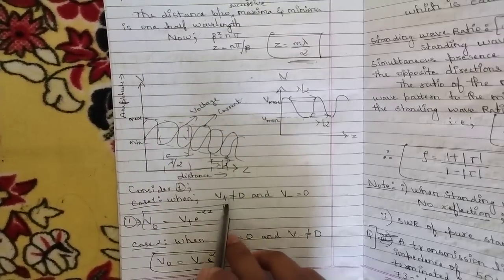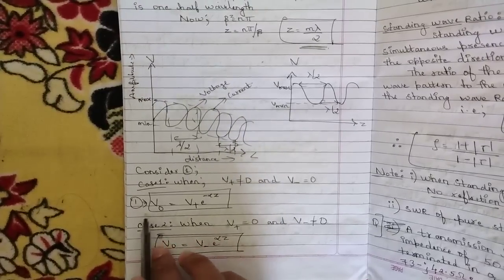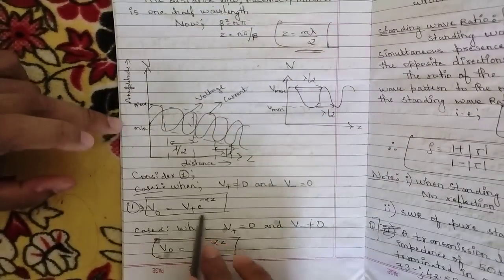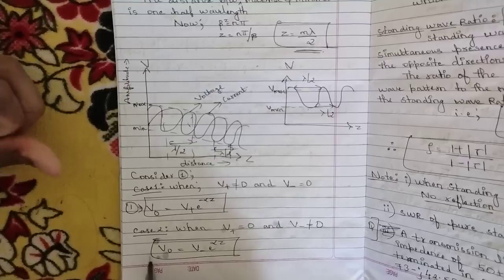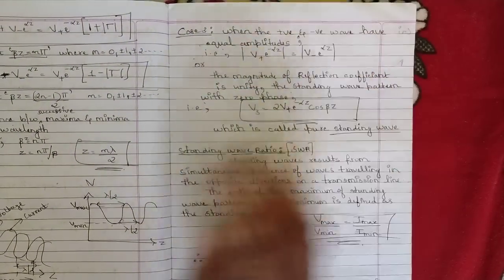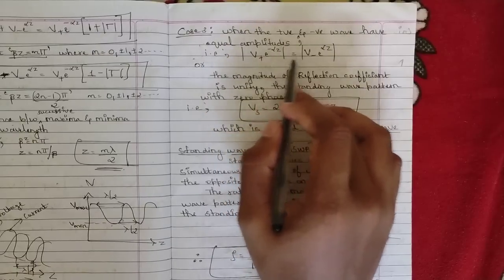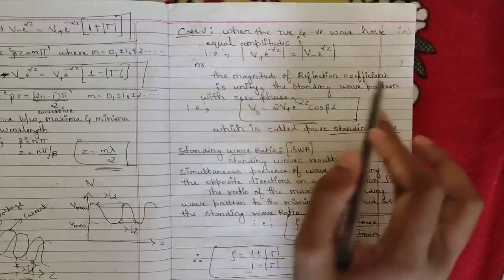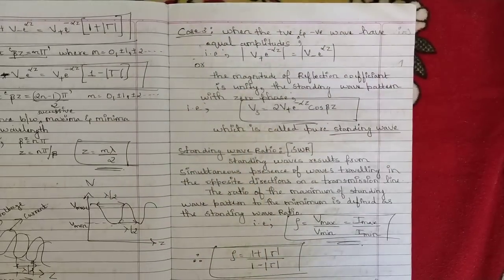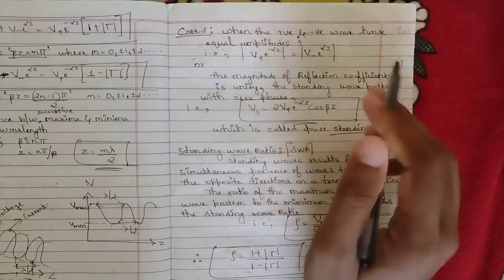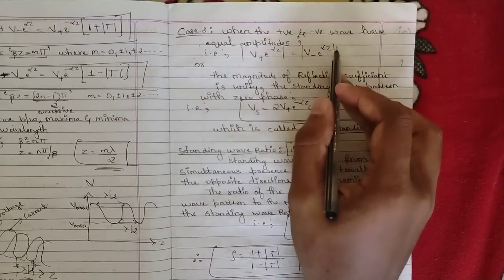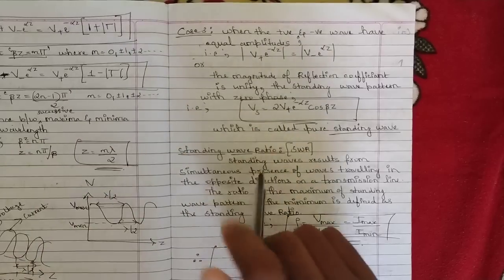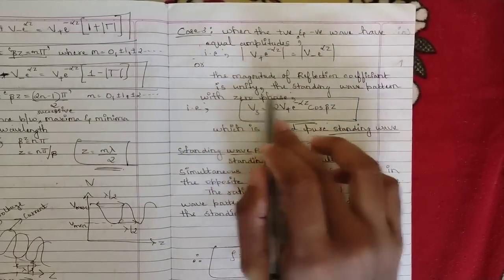Consider Case 1: when V-plus is not equal to 0 and V-minus equals 0. In this case, from equation 1 we get V-naught equal to V-plus times e to the power minus alpha-z. For Case 2: when V-plus equals 0 and V-minus is not equal to 0, we get V-naught equal to V-minus times e to the power alpha-z. Case 3: when the positive and negative waves have equal amplitudes — V-plus times e to the power minus alpha-z equals V-minus times e to the power alpha-z — then the magnitude of the reflection coefficient is unity, because dividing equal values gives 1, so the remaining reflection coefficient equals unity.